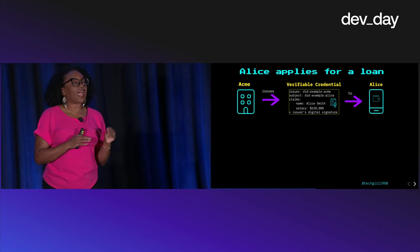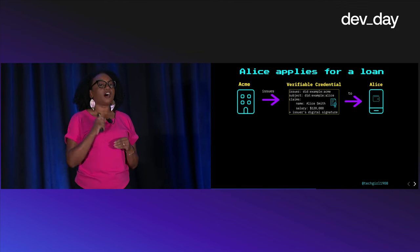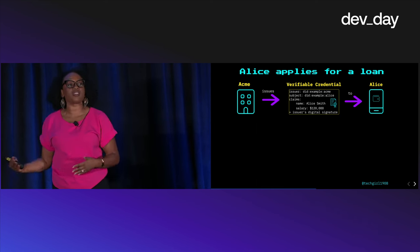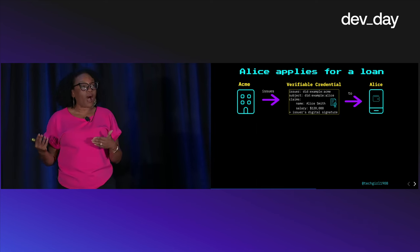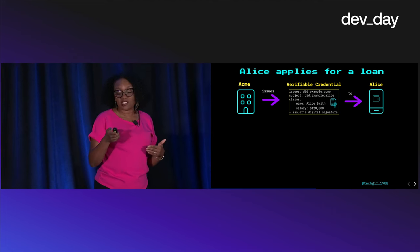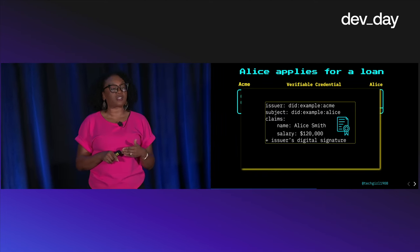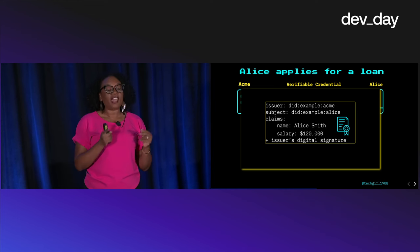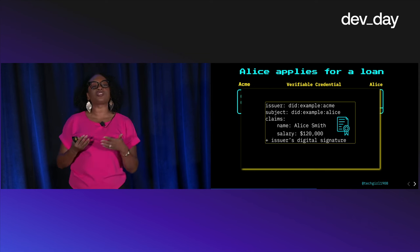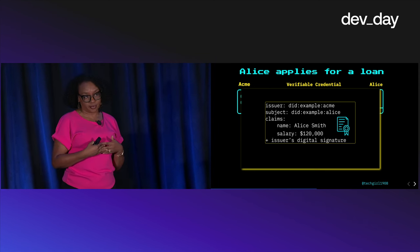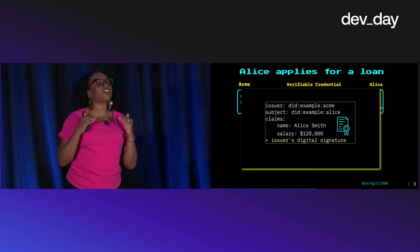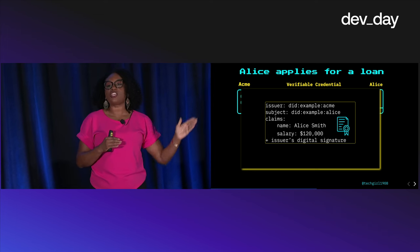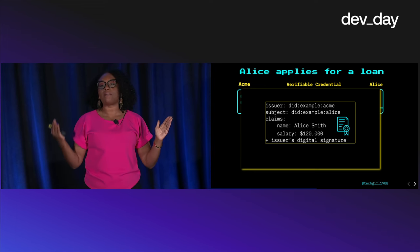Alice's employer, ACME, will issue a verifiable credential to Alice, which she then keeps with her — she can store this in something like a digital wallet. Inside that credential we have the issuer, who is ACME, and the subject, who is Alice — more specifically, we have their decentralized identifiers. And then we have claims that the issuer is making about the subject.